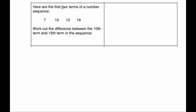Our next question says here are the first four terms of a number sequence: 7, 10, 13, 16. So they're increasing by 3 each time. And the question says work out the difference between the 10th term and the 15th term in the sequence.